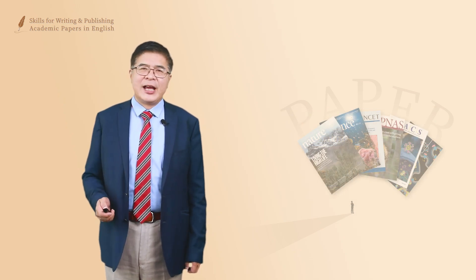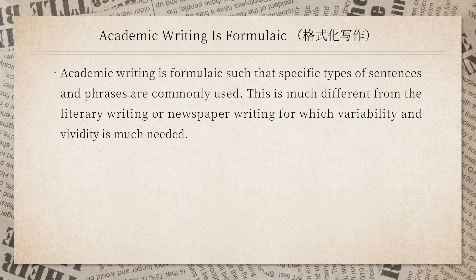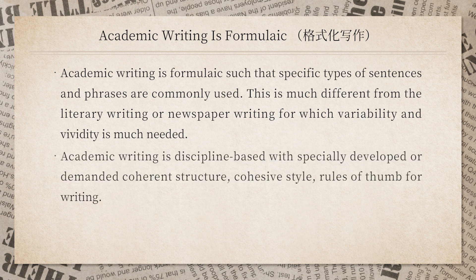With these questions in mind, let's start today's talk. The first topic I want to discuss is: why is academic writing formulaic? We have to keep in mind that academic writing is formulaic, such that specific types of sentences and phrases are commonly used. This is much different from literary writing or newspaper writing, for which variability and creativity is much needed. Bear in mind that academic writing is a special kind of writing — it's not for everybody to read; it's for scholars or students of a particular discipline.